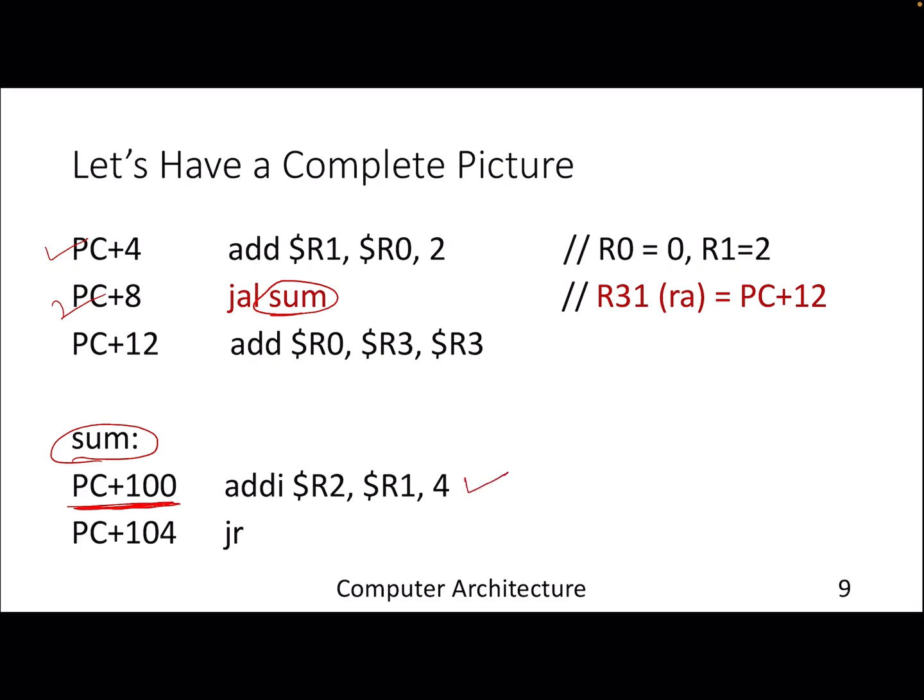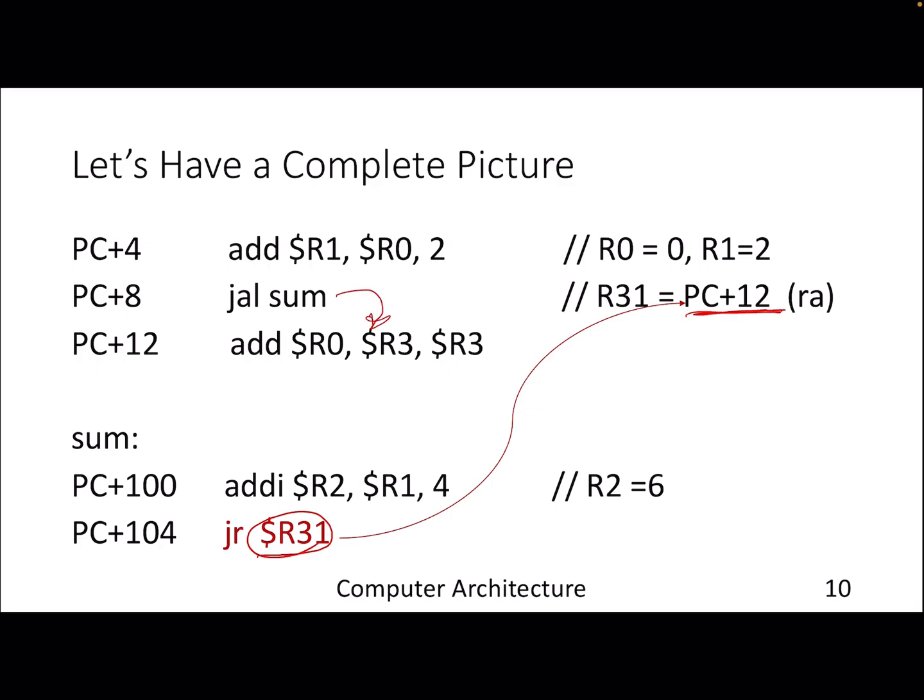You do the computation that is specified within the function. And after that, we need to use the jr instruction, which will jump based on the content of this particular register called ra. For the sake of simplicity, here I am naming the registers as register R0 to R31 and there are 32 registers. So the register 31 is actually the ra register. So now what will happen is you will put R31 here. R31 is actually storing PC+12, which is the very next instruction after the function call. So in this way, we can jump into any particular function and subroutine and we can return with the help of this instruction, jump register.